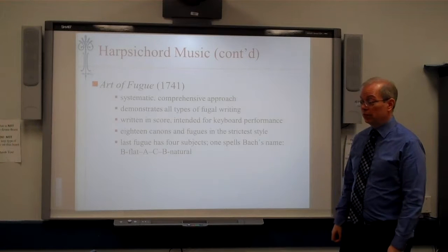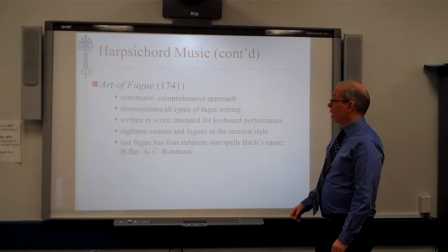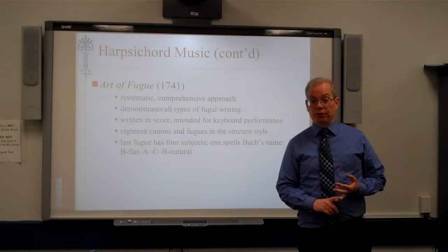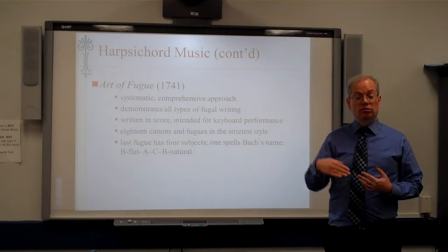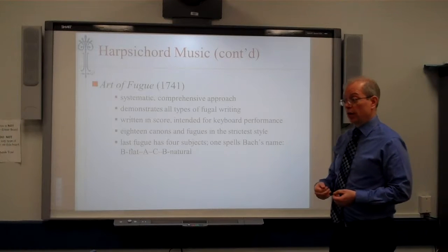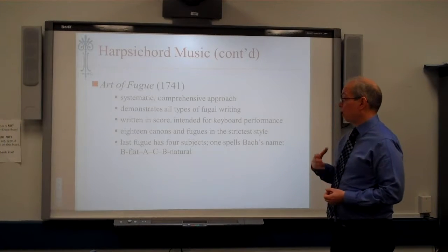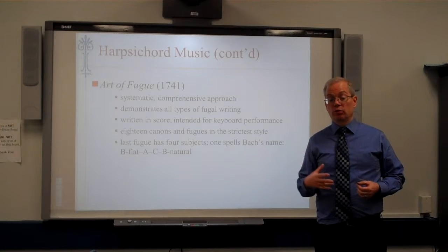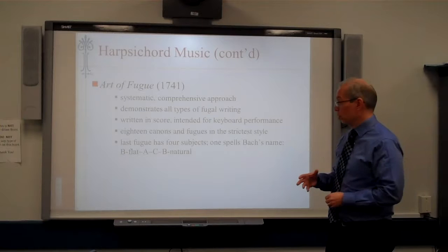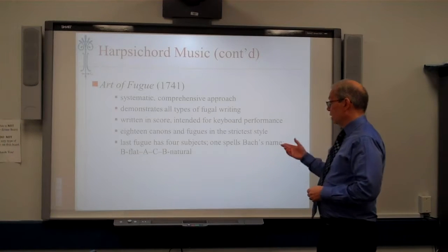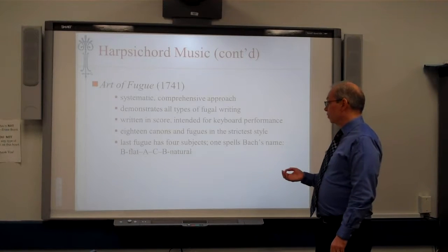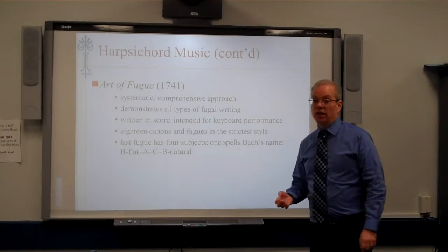Bach died before he completed this work. There are simple fugues, double fugues, and stretto fugues, where the next entrance of the subject is always before the previous one ends. There are crab canons, which are basically like musical palindromes, where lines are the same backwards as forwards. His last fugue is actually a quadruple fugue with four different subjects, and one of those subjects spells out Bach's name.